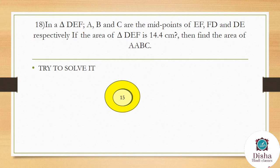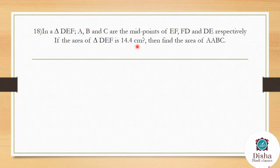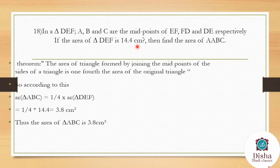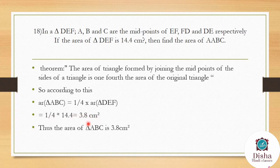In triangle DEF, points A, B, C are midpoints of the sides FD, DE, and EF respectively. The area of triangle DEF is 14.4 cm². Find the area of triangle ABC. By the midpoint theorem, the area of a triangle formed by joining midpoints of a triangle's sides is 1/4 the area of the original. So area of ABC = (1/4) × 14.4 = 3.6 cm².